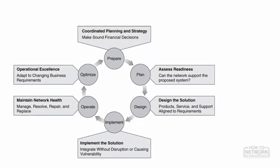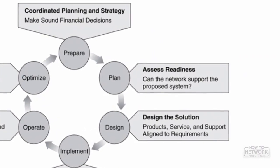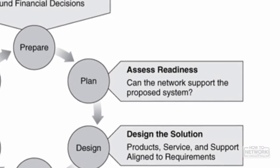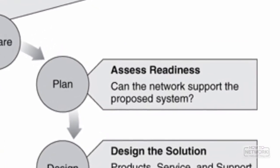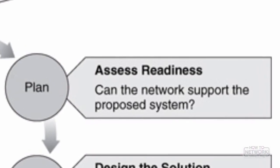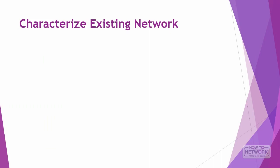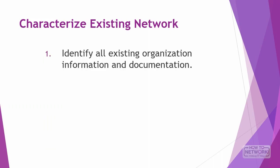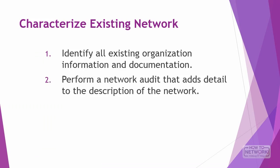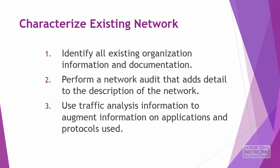When characterizing an existing network, you need to obtain all existing documentation. Sometimes no formal documentation exists, so you need to use tools to obtain information and log into network devices. The steps to gather information are: first, identify all existing organization information and documentation; then perform a network audit that adds detail to the description of the network; and finally, use traffic analysis information to augment information on applications and protocols used.